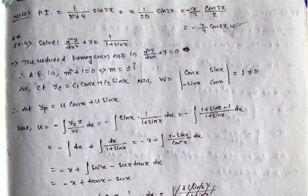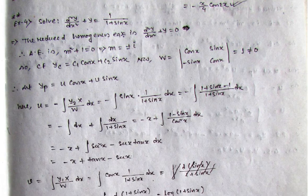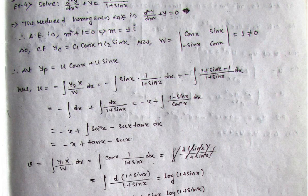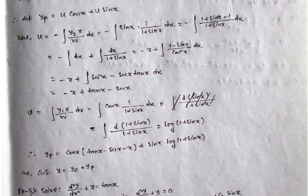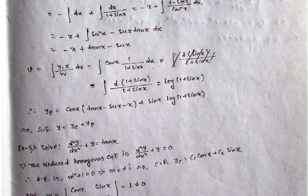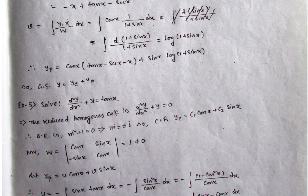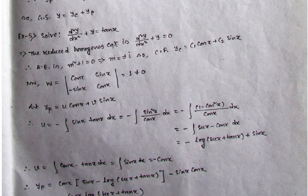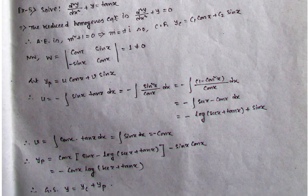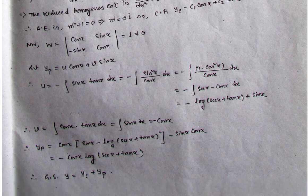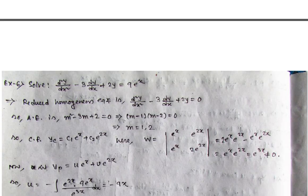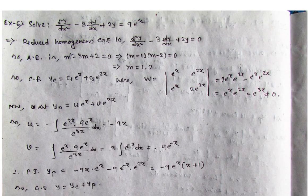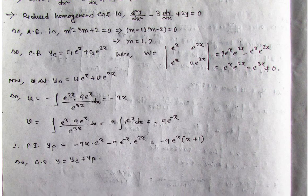Many problems have been solved here, all very important for the exam — these are actual past exam questions selected specifically for your benefit. Try to solve all those problems, and if you face any difficulty you can ask me. This is the end of our topic — the method of variation of parameters.